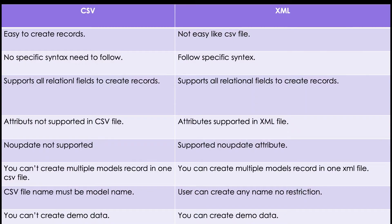In a CSV file, you don't need to worry about syntax — you only need to add plain text. Whenever we create any record in a CSV file, we create it like a normal CSV: comma-separated values. In the first row we mention the column names, and then in subsequent rows we add records separated by commas. That's it.